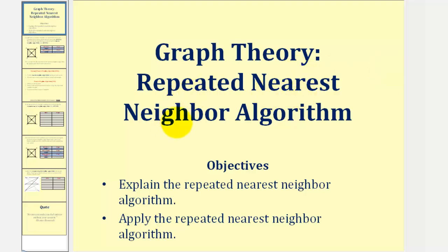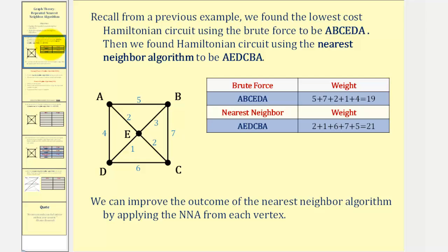Welcome to a lesson on the repeated Nearest Neighbor Algorithm. Using the graph here on the left, in a previous lesson, we found the lowest cost Hamiltonian circuit using the Brute Force Algorithm to be the circuit ABCEDA with a total weight of 19. We knew this was the optimal Hamiltonian circuit because the Brute Force Method is the only method that guarantees finding the lowest cost Hamiltonian circuit. We also found the Hamiltonian circuit using the Nearest Neighbor Algorithm to be AEDCBA, which had a total weight of 21 — not the lowest cost.